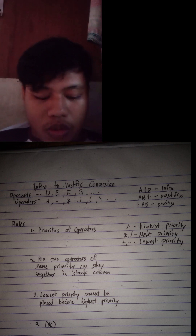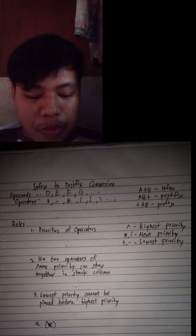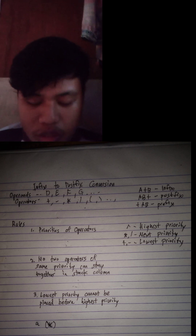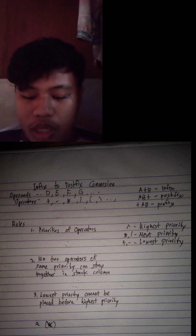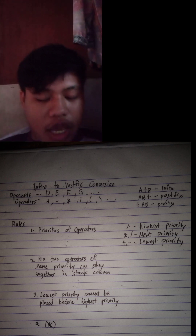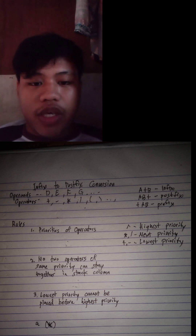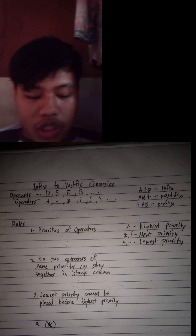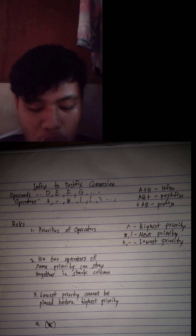And division, and open and close parenthesis, and so on. There are four rules. First, priorities of operators: the highest priority is exponent, the next priority is multiplication and division, and the lowest priority is plus and minus.